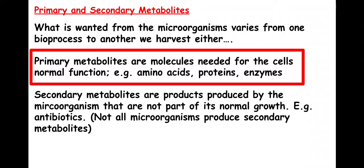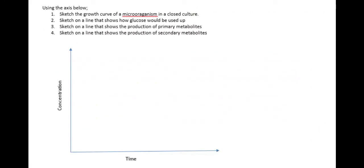So what this looks like in the graph: we need to know the growth curve, where glucose is used up and how it would be used up, where I've got more primary and where I've got more secondary metabolites.